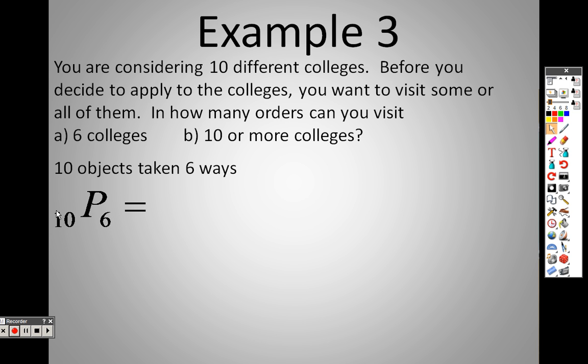The bigger number has to come first—it has to. I couldn't write this as 6P10; it wouldn't make sense. Make sure the larger number comes first. According to our formula, that means ten, which is N, goes on top: ten factorial. Then you take the two items and subtract, so ten minus six factorial. It's N factorial over (N minus R) factorial.